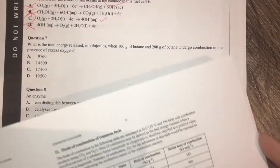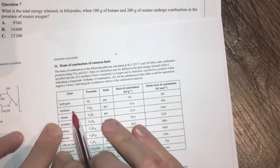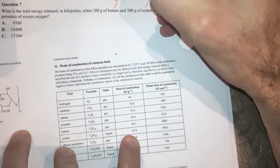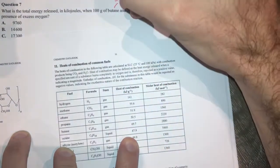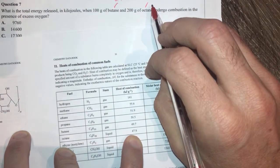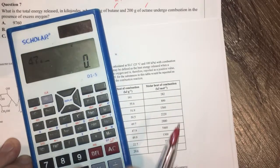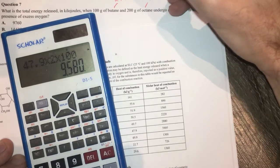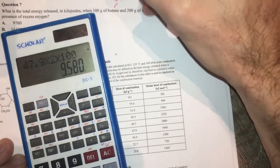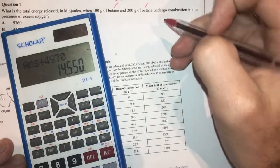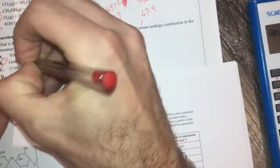So in my data booklet here I've got the heat of combustions for a few things. Butane is 49.7 and octane is 47.9. I've got 100 grams of that so it's going to be 497.0, and we've got 200 grams of that so if I just get my calculator and do 47.9 times 2 times 100 gives me 9580. I've got an extra zero there which I shouldn't have. Plus those two together gives me 14.55 which gives me B.